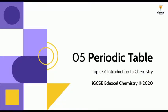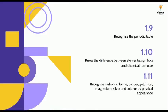The periodic table is another fundamental element of chemistry, and you need to know how to recognize it, what to know about the difference between elements and chemical formulae, and you also need to know the physical appearance of some popular metals.